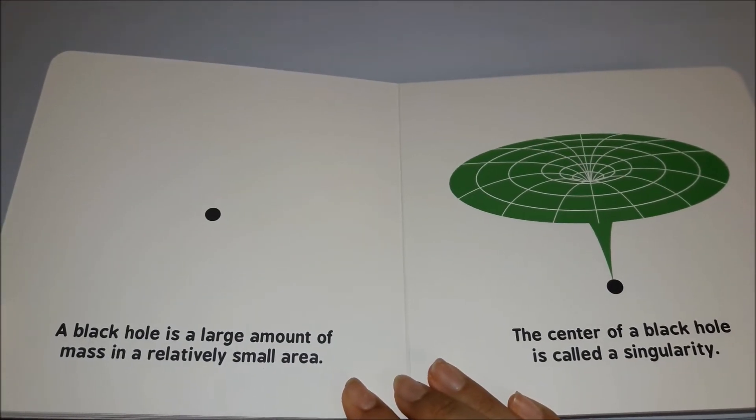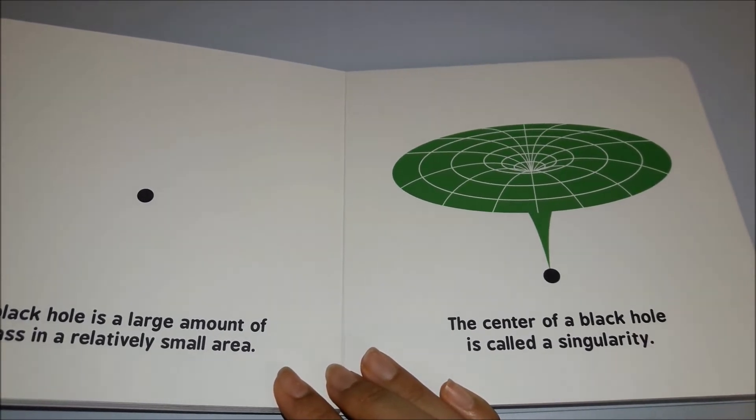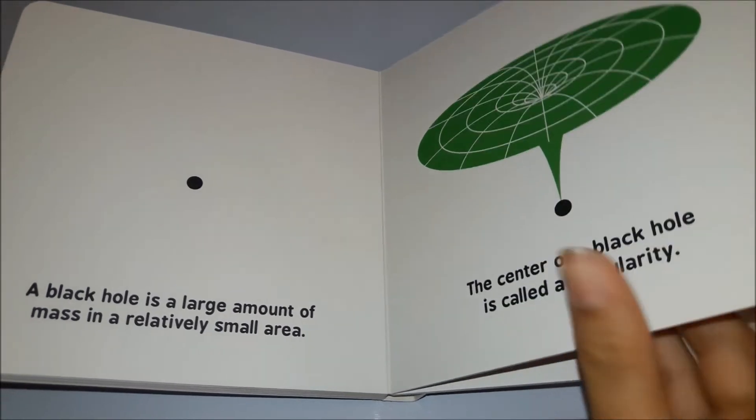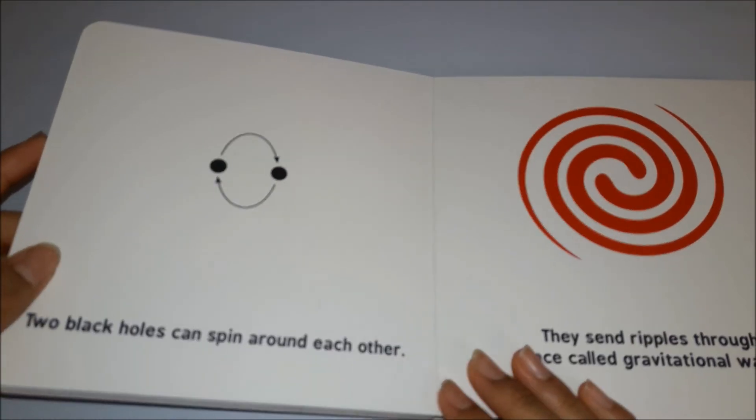The center of a black hole is called a singularity. Two black holes can spin around each other.